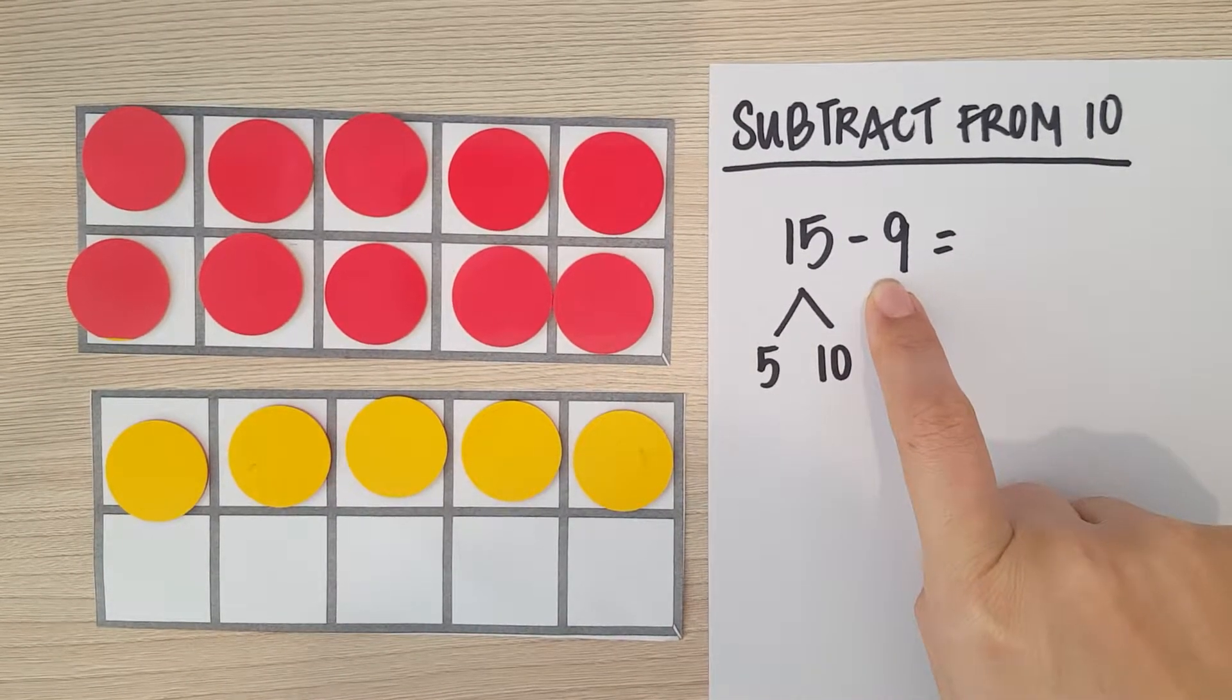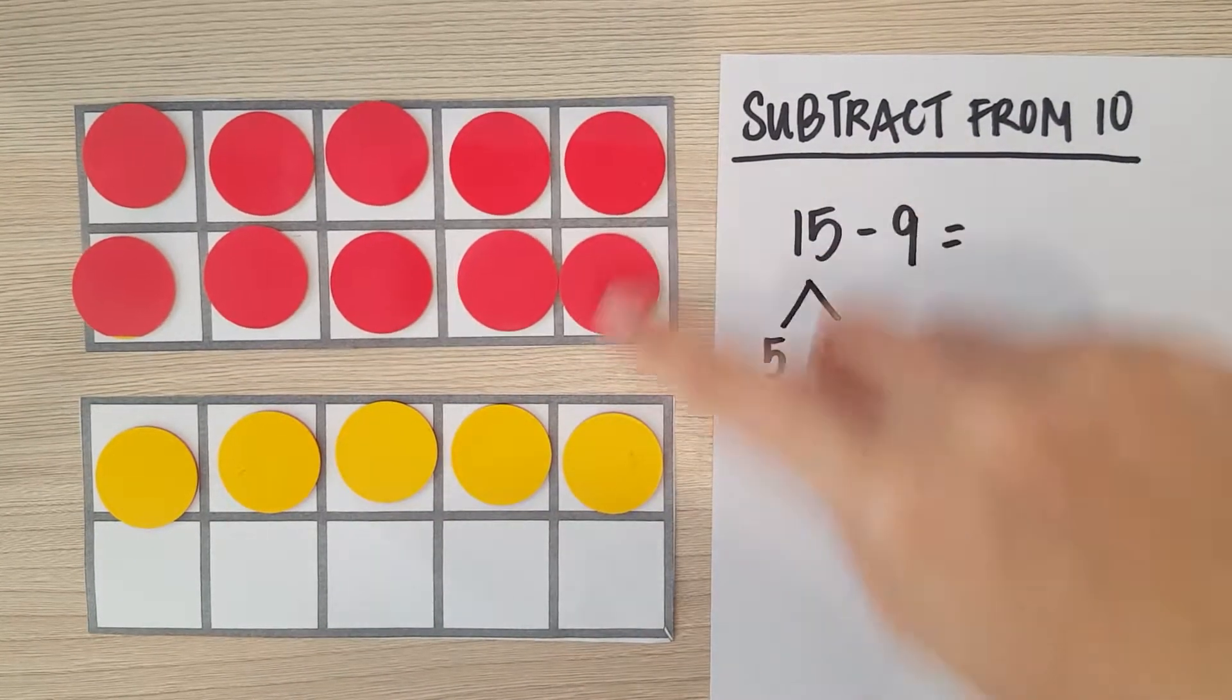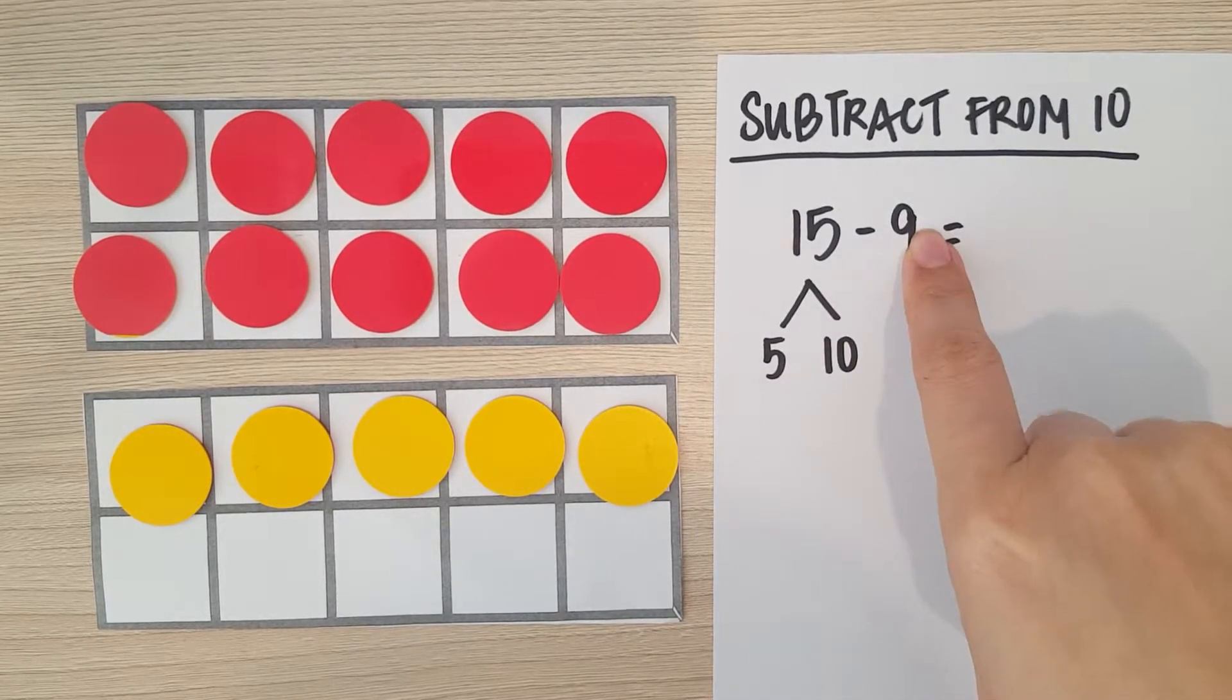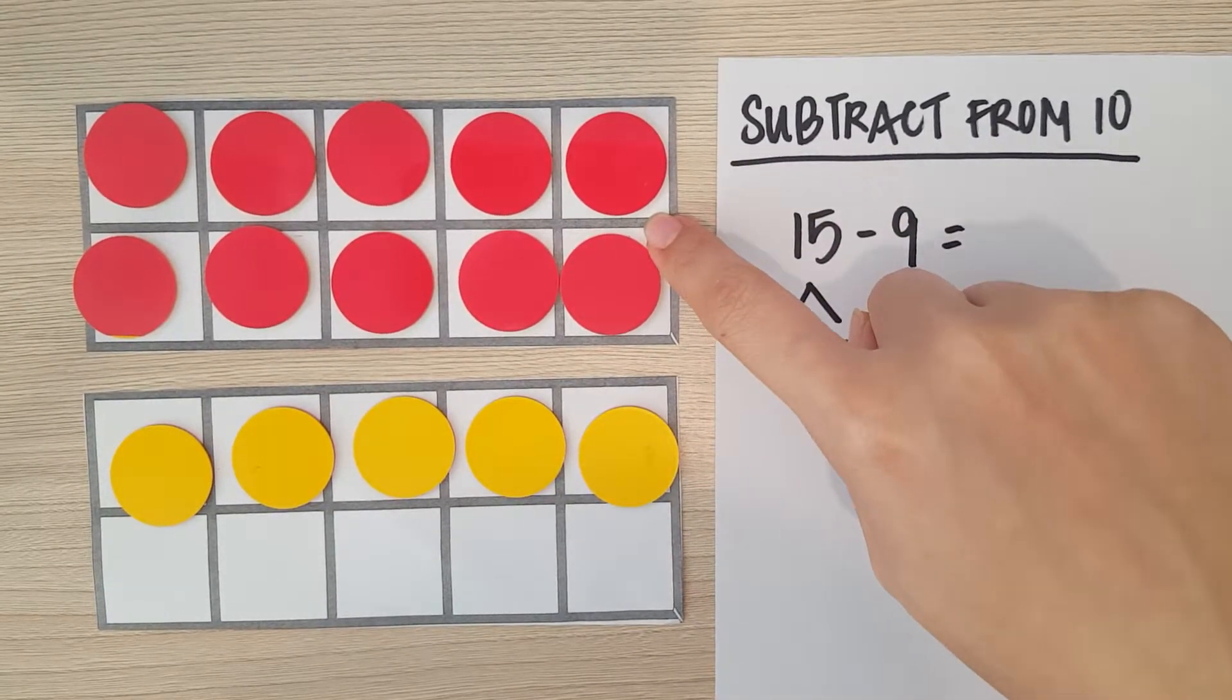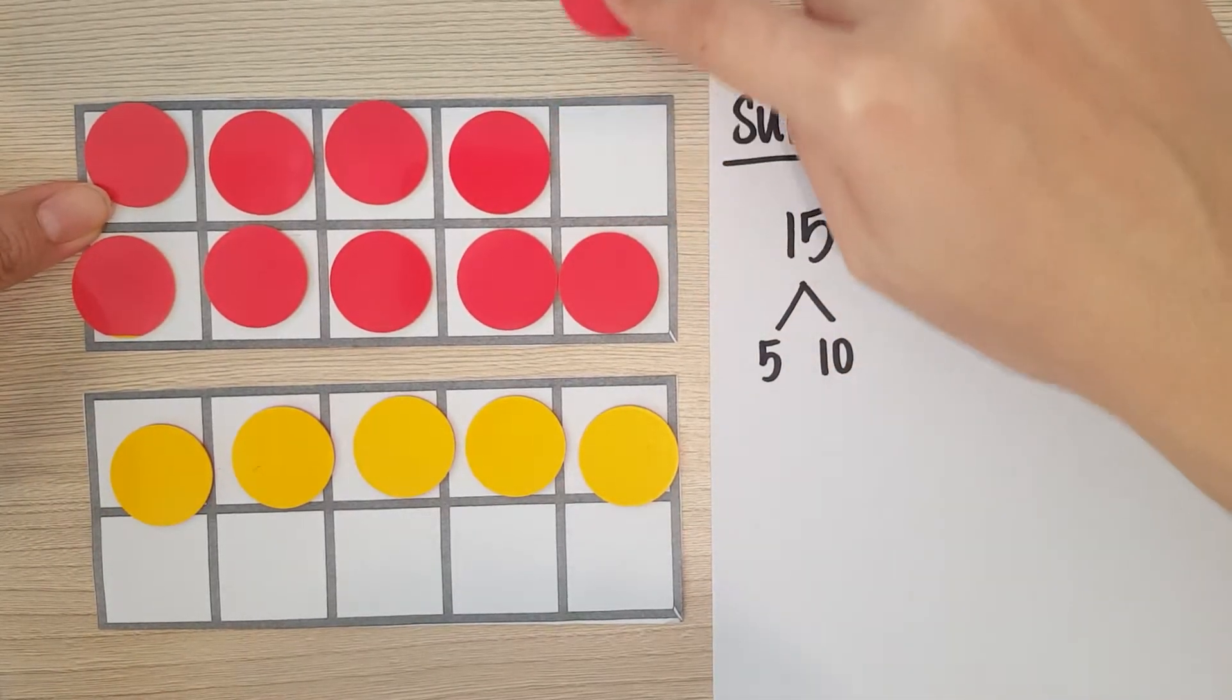That's what subtraction means. Can I take away nine from this five? That's not enough. So I'm not going to take away from this five. I'm going to take away nine from the 10. Let's see, if I take away nine from 10, I'm going to have...